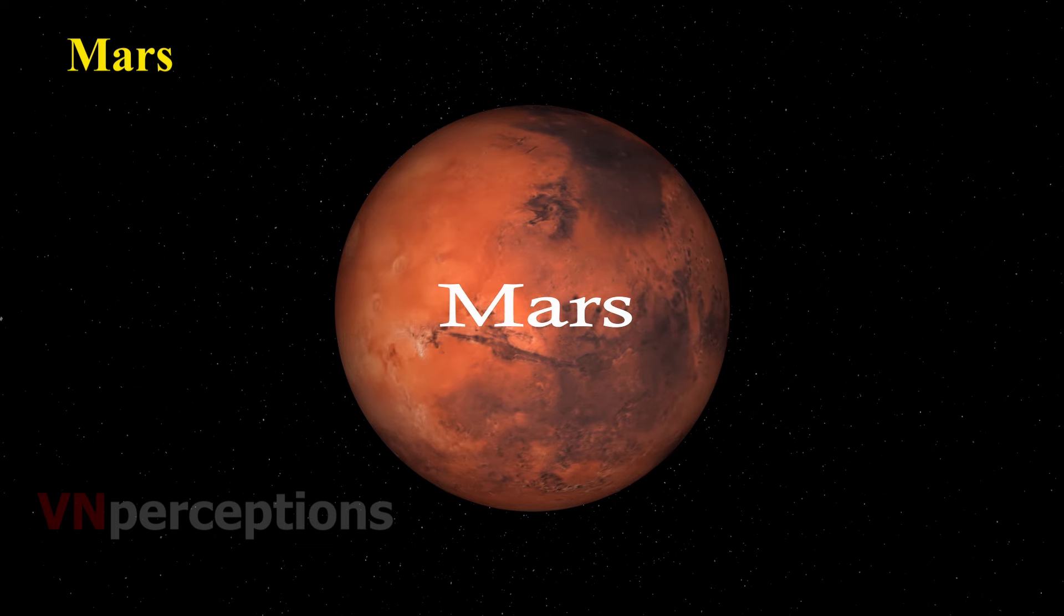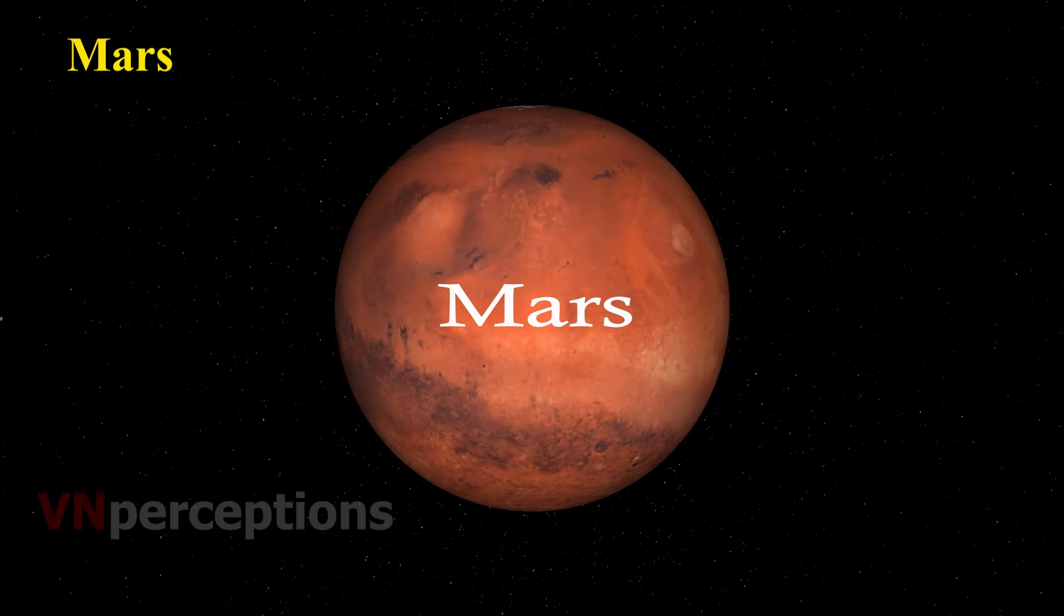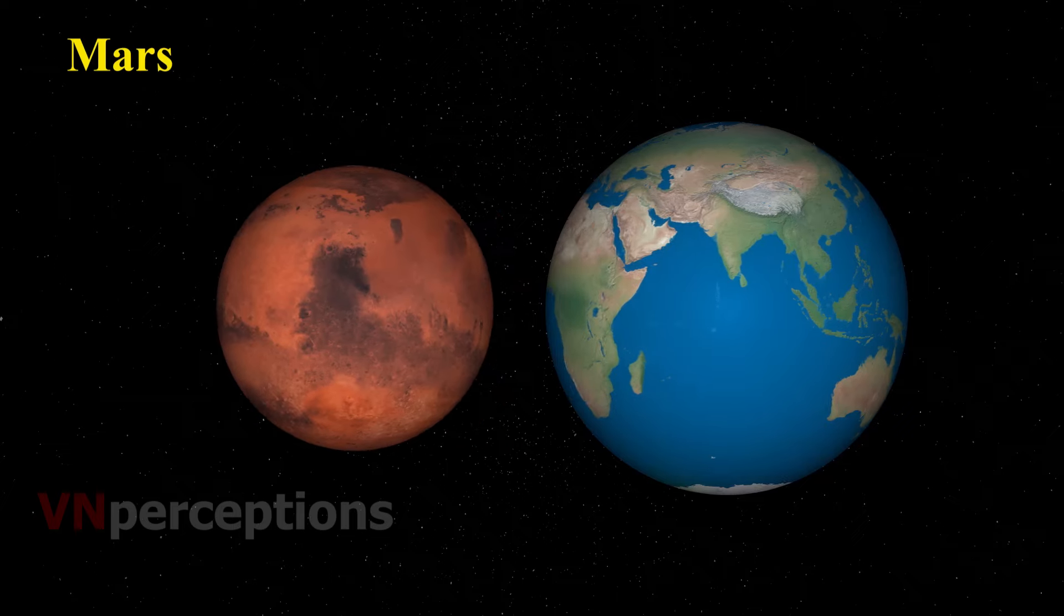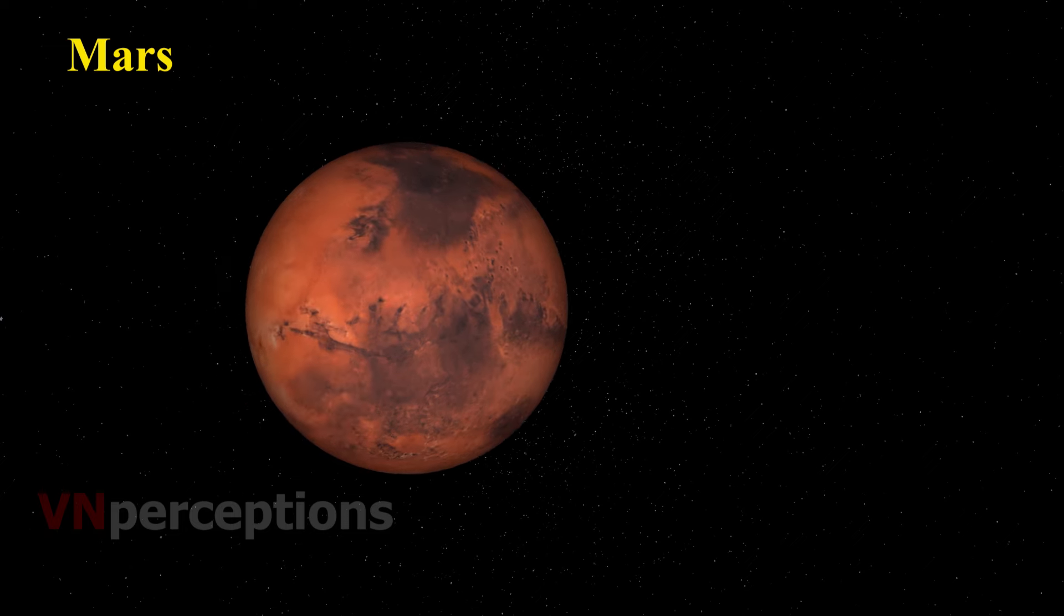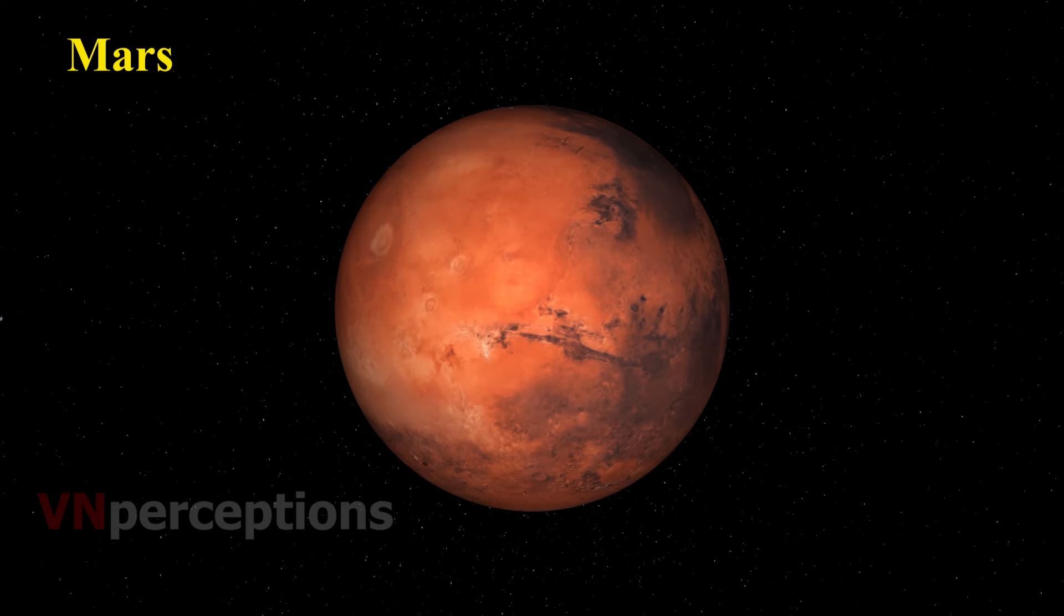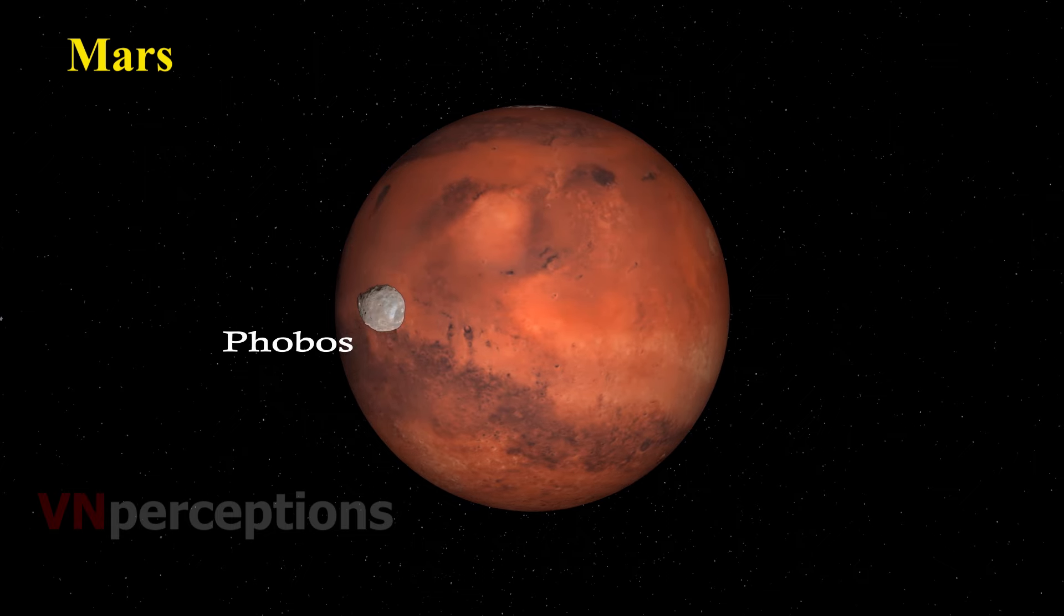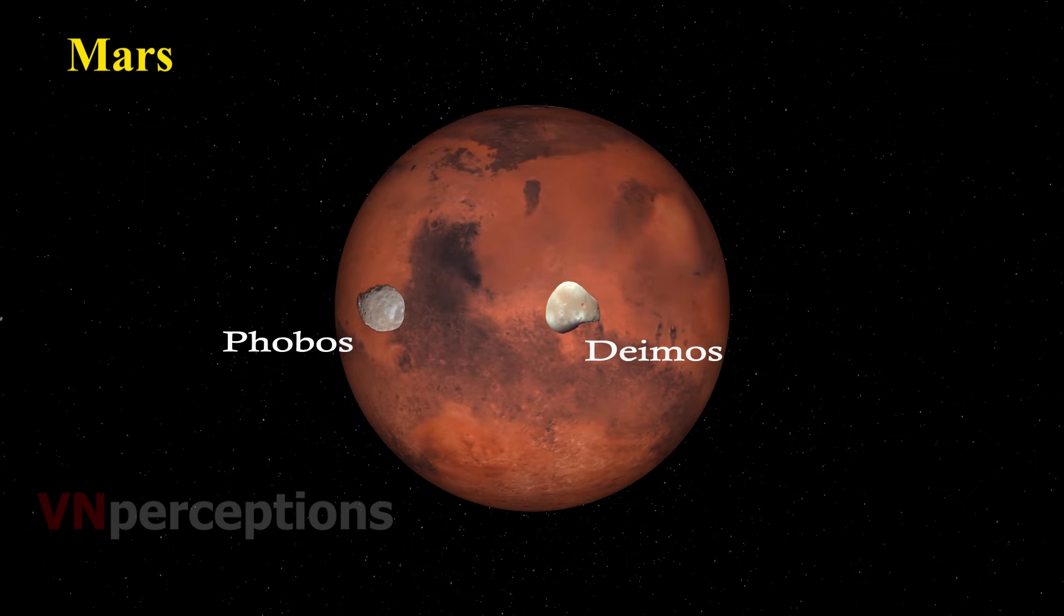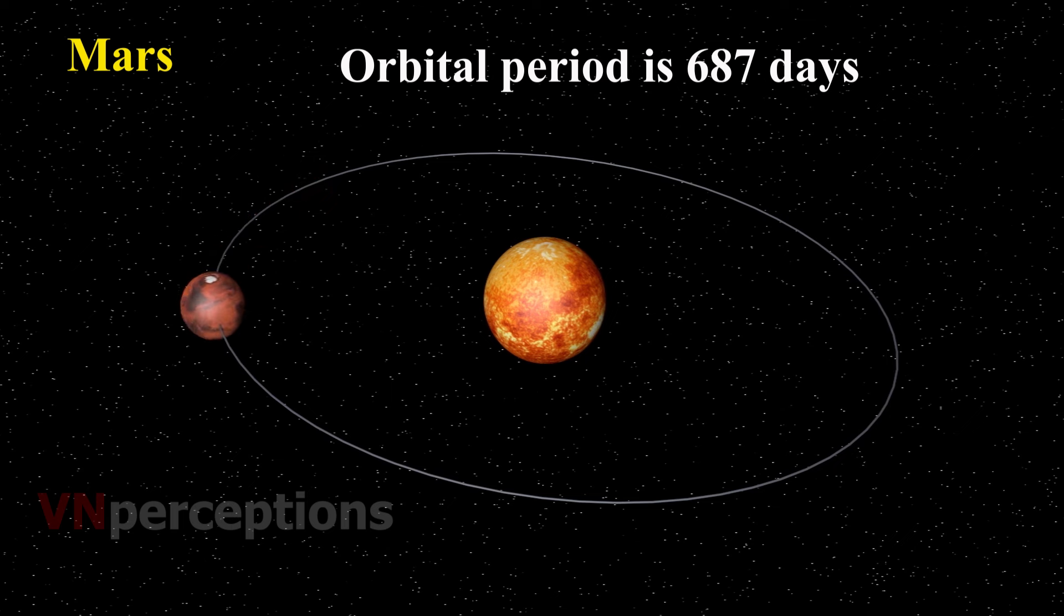Then comes Mars, the next planet, the first one outside the orbit of the Earth. Mars is a cold desert world. It is half the size of Earth. Mars is sometimes called the red planet. It's red because of rusty iron in the ground. Mars has two small natural satellites, Phobos and Deimos. Its orbital period is 687 days. That is, to complete one revolution, it takes 687 days.